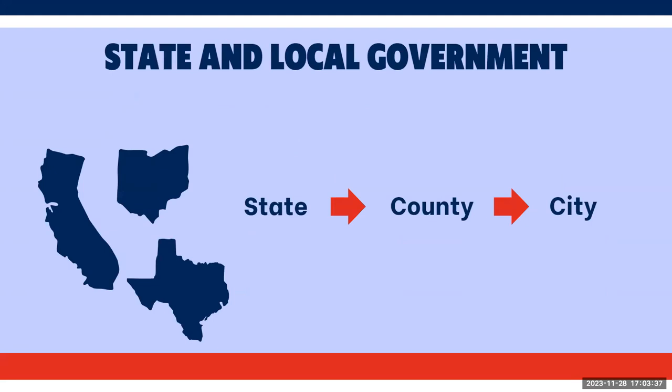Then we have the state and local government. They are modeled after the federal government with three branches of power, and they share their political power with the federal national government. The state refers to the governments of the 50 states, including California, and the kind of information they produce are similar, such as bills, laws, and periodicals and magazines issued by the state.